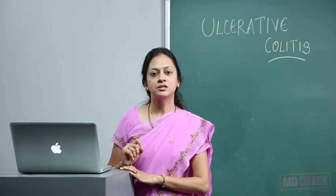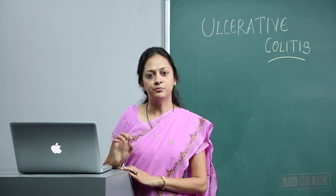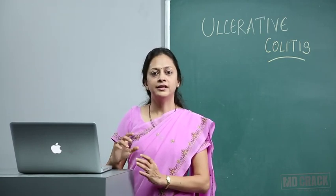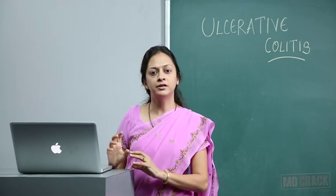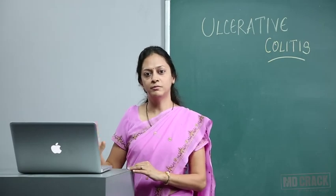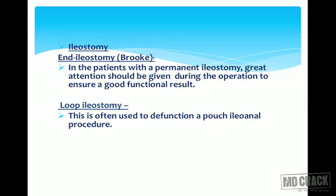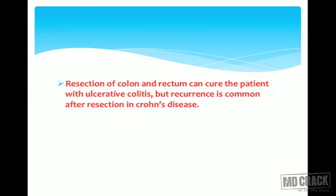Remember all three pouch operations — J, S, and W — as questions can ask which has the largest reservoir or which is most commonly performed. Finally, regarding ileostomy: either end ileostomy (named after Brook) or loop ileostomy can be performed. Loop ileostomy is often done to defunction a pouch ileoanal procedure.